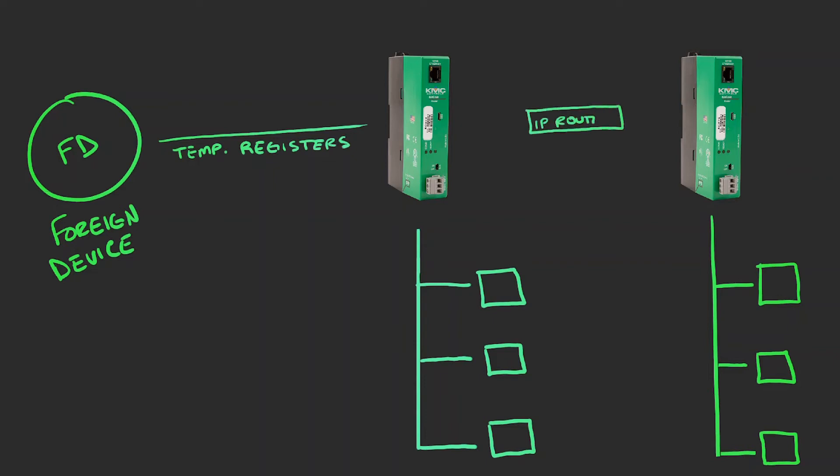By registering with the BBMD, the foreign device becomes a member on the BACnet IP network. It can talk with any BACnet device directly without registration, but will only receive broadcast when successfully registered with the BBMD.